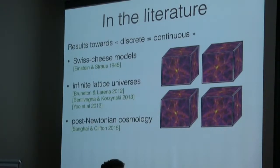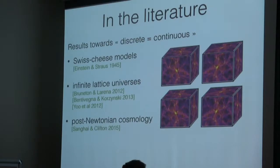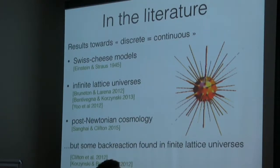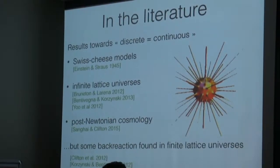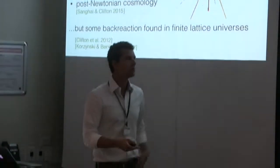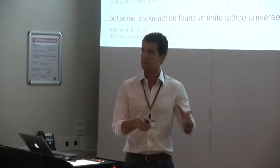In another, more approximate approach, the work of Tim and Raj using a post-Newtonian construction of a universe also shows very tiny corrections in terms of the dynamics. But there are other works based mostly on finite lattice universes — the ones Tim presented — where one can find quite important corrections between the dynamics of the discrete and the continuous universe. I would like to understand why we have those two different results.